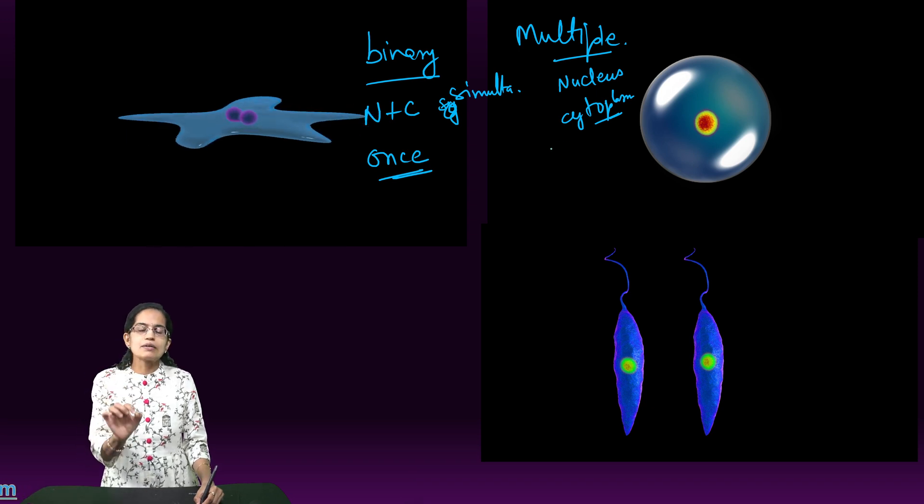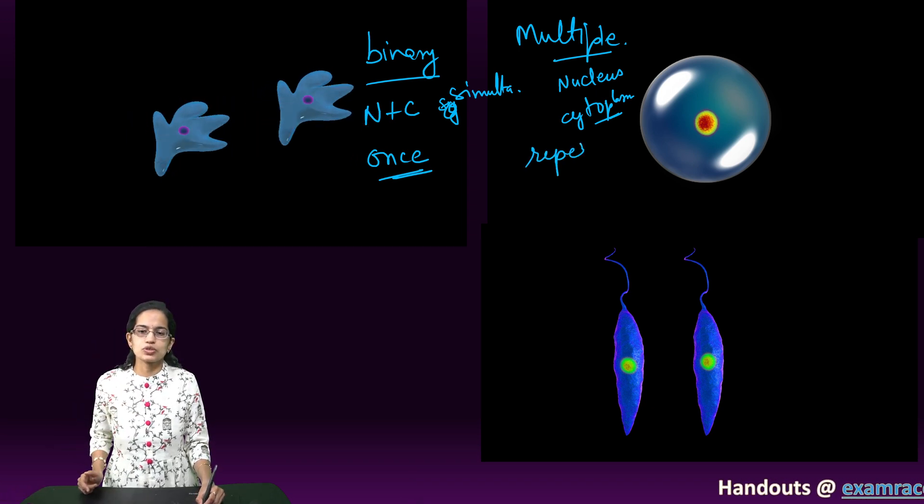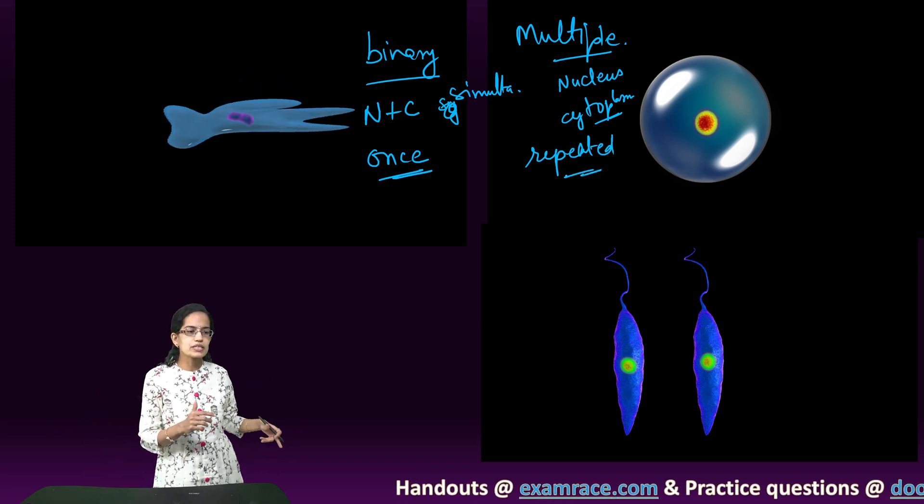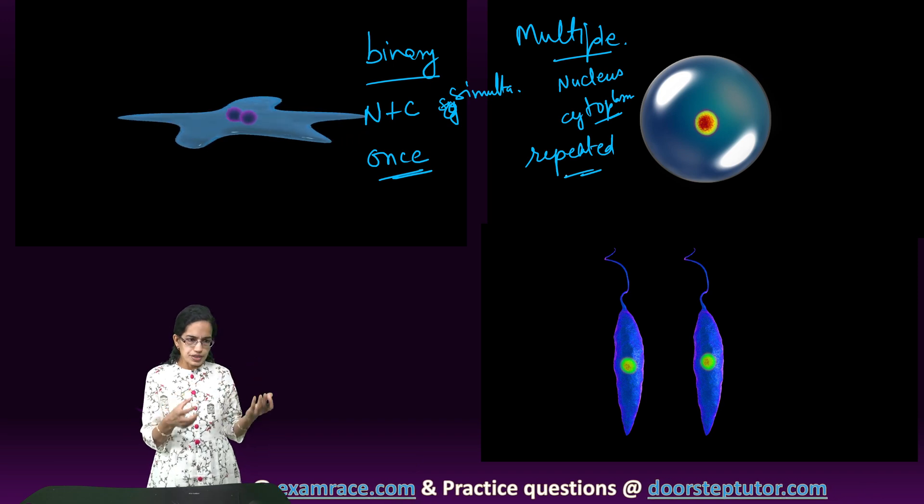However, in multiple fission, you have repeated division. So definitely, since there is repeated division, there are more than one copies of a cell that are being produced.